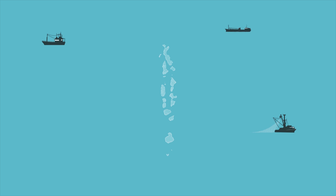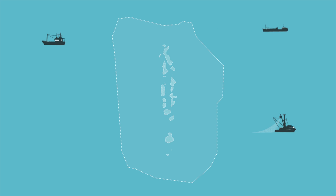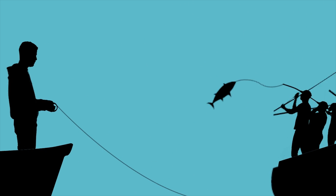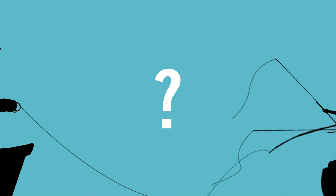Maldivian law does not allow any form of net fishing within its exclusive economic zone. Traditionally, pole-in-line and hand-line are the predominant fishing techniques. So where are these nets coming from?